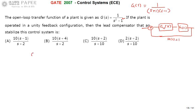The open-loop transfer function of the modified system can be written as g(s) times gc(s). If you choose this combined open-loop transfer function such that all its poles lie on the left half of the s-plane, then the closed-loop transfer function will also be stable. So you simply multiply the given compensator transfer function with g(s) and check which option gives all poles on the left half of the s-plane.